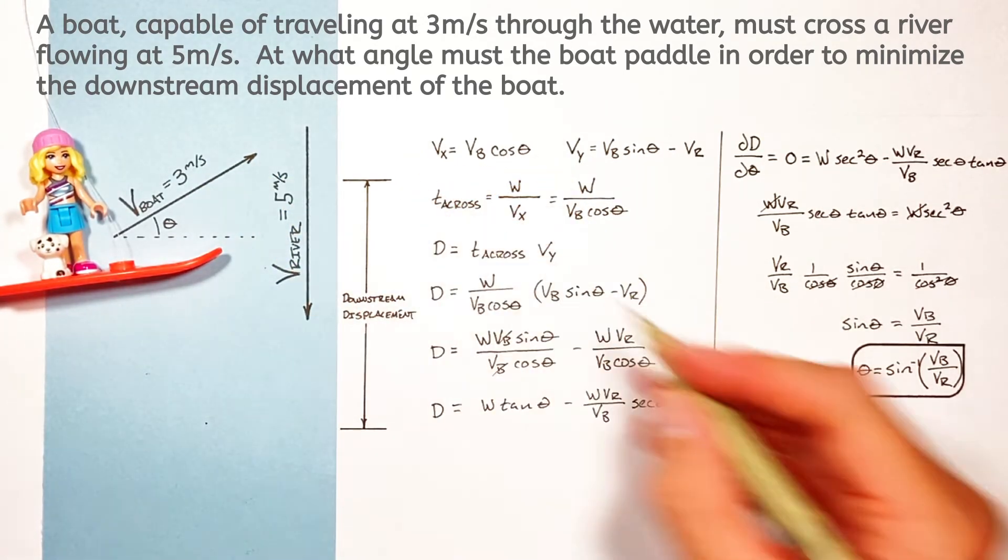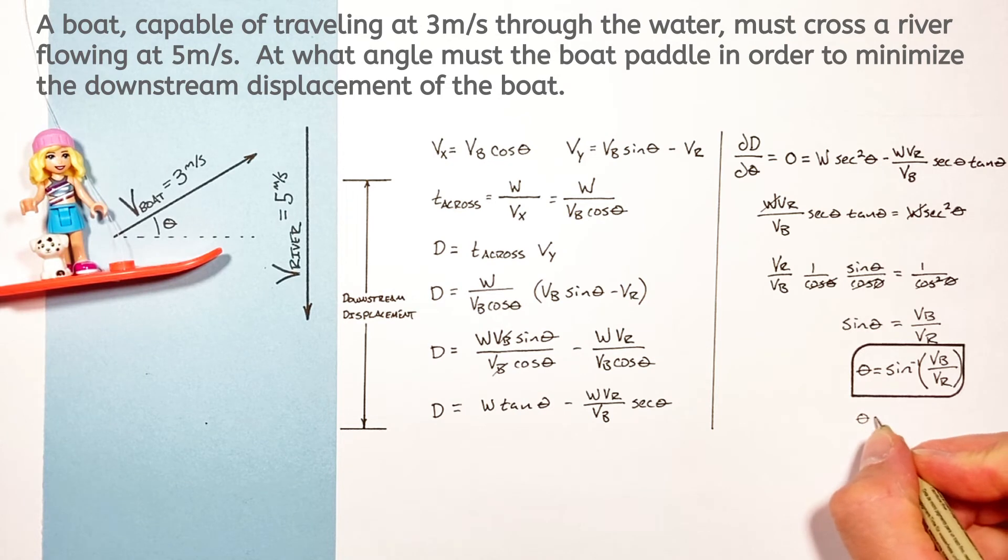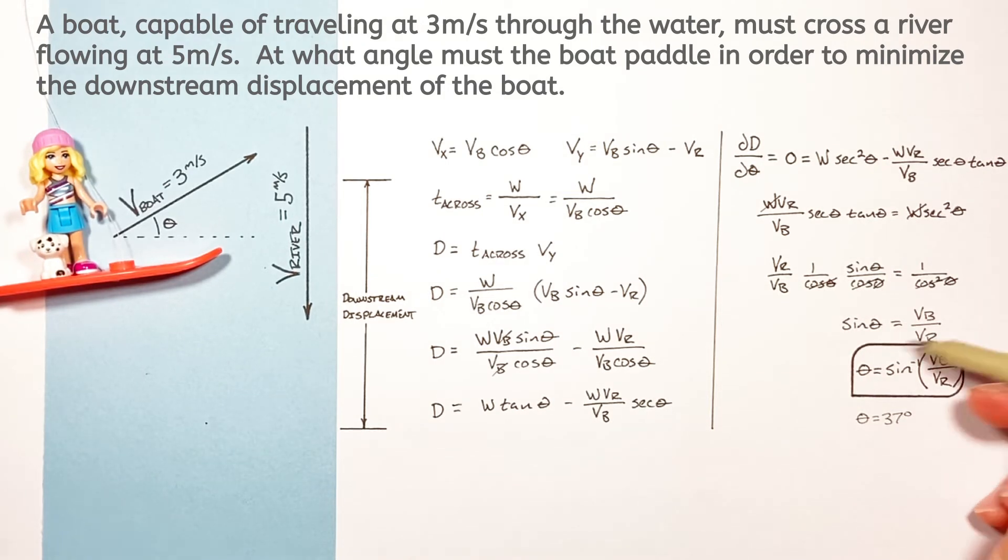And if you go back and plug in our original numbers you get theta is 37 degrees and you're probably doing this with different numbers so you'll get a different result. But regardless I never cease to be amazed at how simple this result actually works out to be.